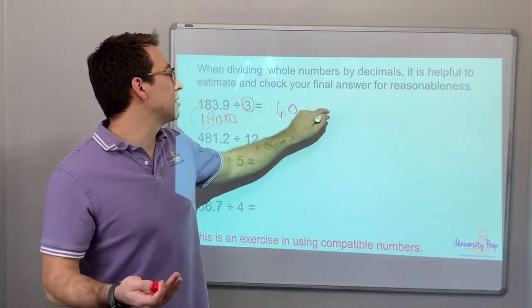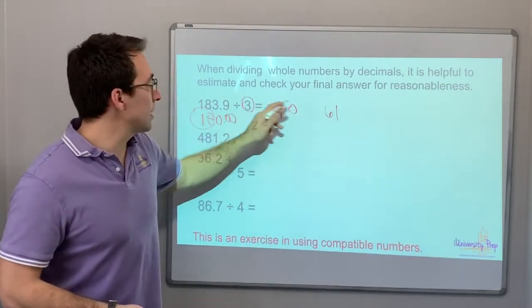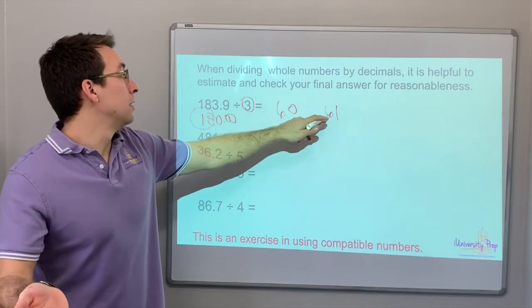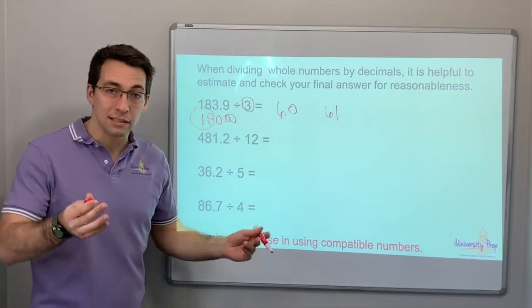Maybe we could even say, just even guess again, 61. 3 times 1 is 3. 3 times 6 is 18, so that's 183. It's right there. Estimate.